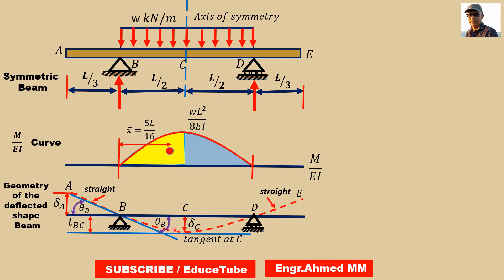There is no bending moment here and here, as we can see on the M/EI diagram. There is no moment between A and B and between D and E because those regions are unloaded.